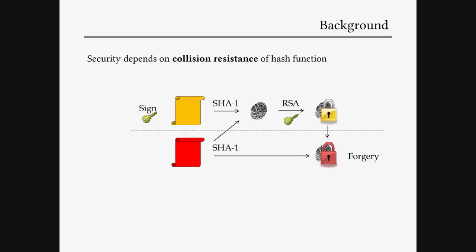Because these signature standards use the hash directly, the security of these standards depends on the collision resistance of the hash function. Because if an attacker can already build a collision for SHA-1 and basically gets one message signed by someone, then the signature for that message is also a valid signature for the other colliding message — the hash you compute from the message side is the same as you can reconstruct from the signature. This would not be possible if the signer actually used randomness — for instance, a MAC with a randomly generated key supplied together with the signature.